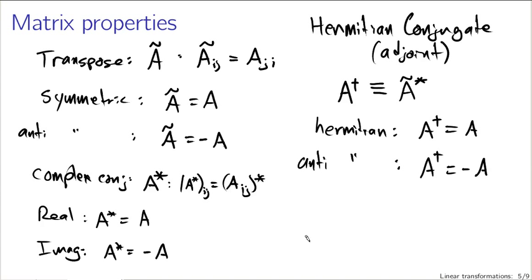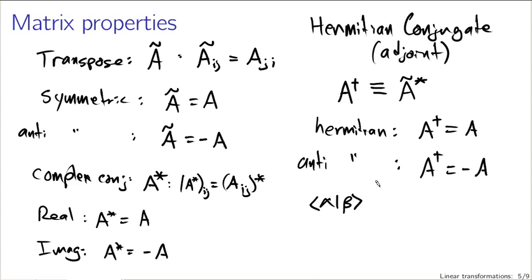Coming back to our inner product: if we're representing states as vectors, the inner product of alpha and beta — where alpha is written as a bra and beta as a ket — the difference between bras and kets has something to do with the complex conjugate.